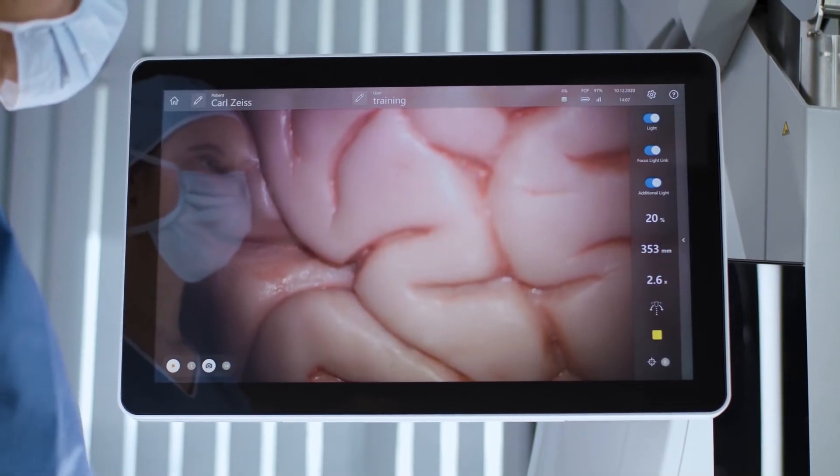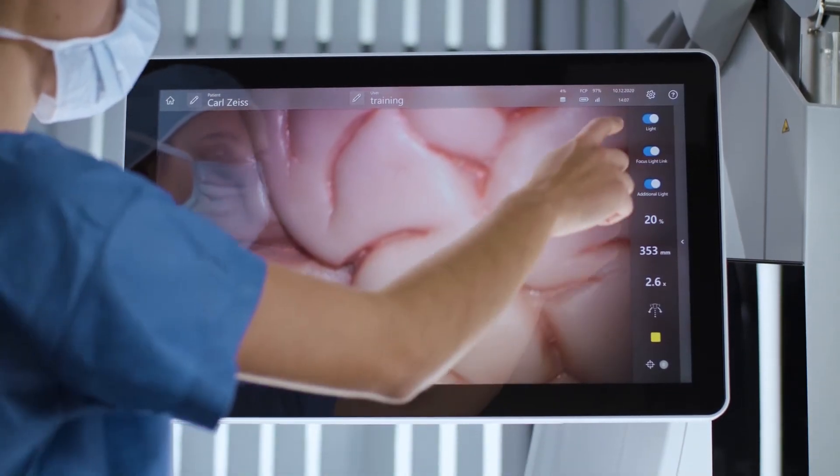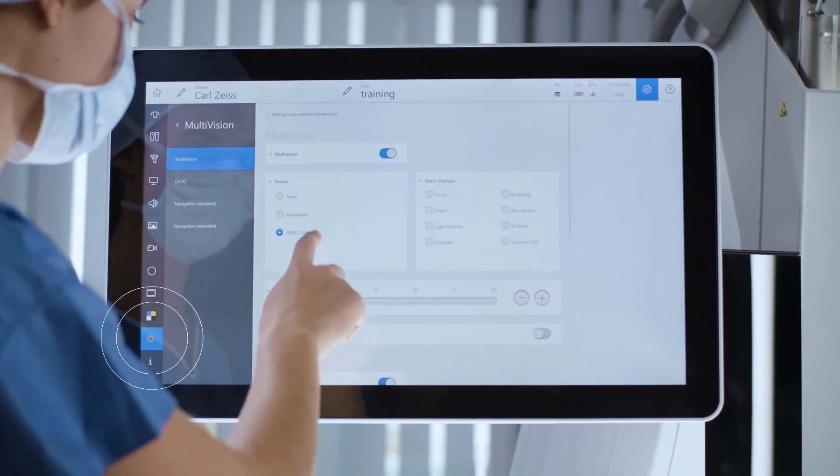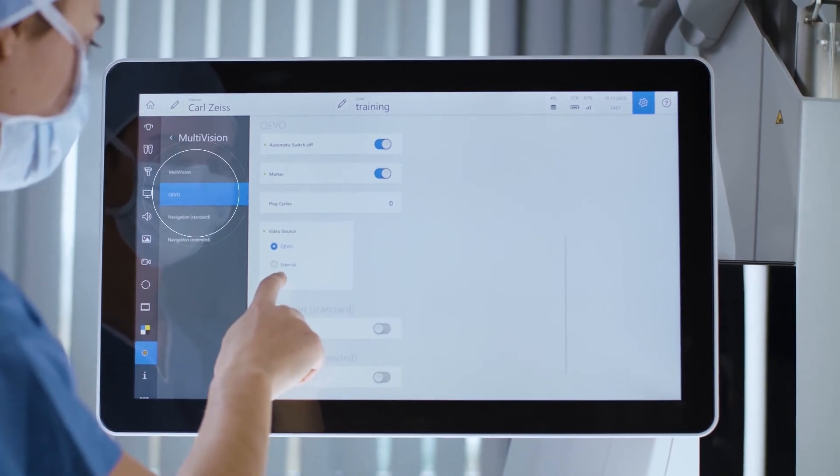To activate the input of Zeiss Convivo Surgical Workplace, press Settings, select Multi-Vision, select Kavo and choose Video Source External.